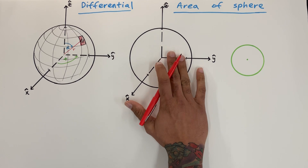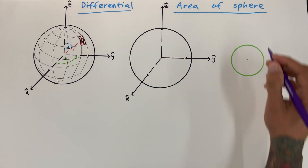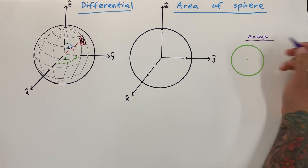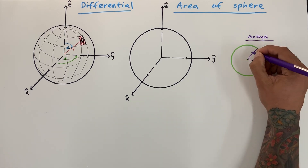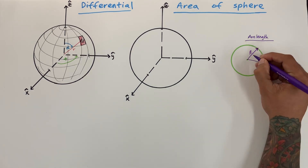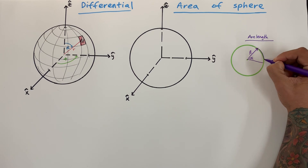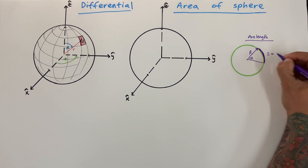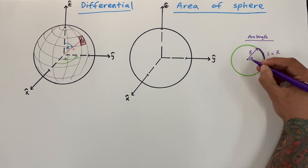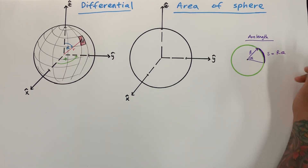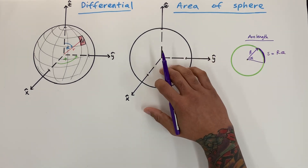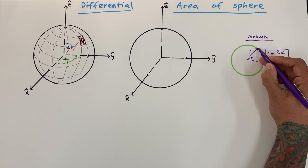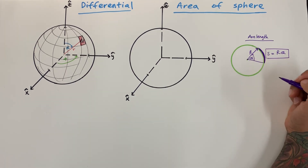Before we proceed, I want to review arc length. Arc length: we have some length r coming out at an angle theta, and the arc length s equals the radial distance from the center times the angle. So arc length s equals r times theta. This is going to be very important in understanding how we get the differential area, so keep that in mind.